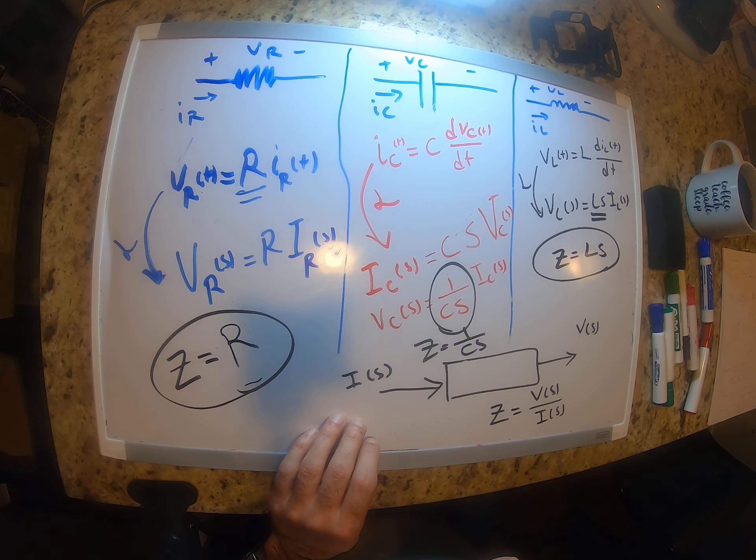Let's say we have a basic RC circuit that takes an input voltage — it can be any input voltage, it can be a unit function, a sine, cosine, DC, many different things. We have an R and we have a C.